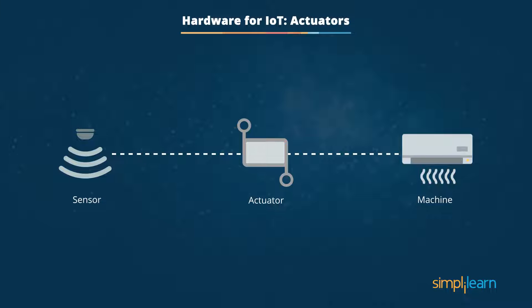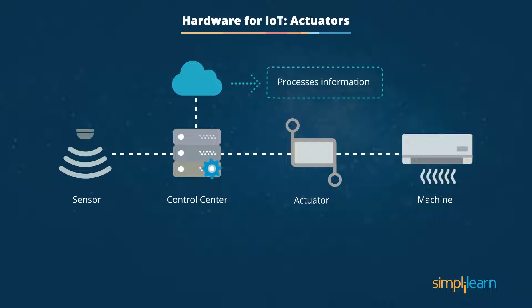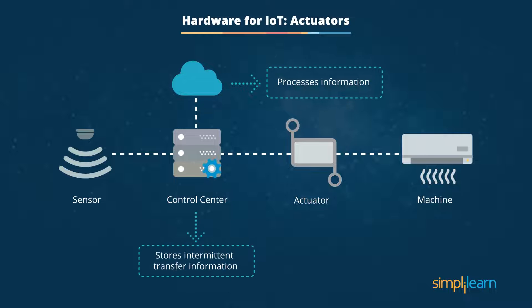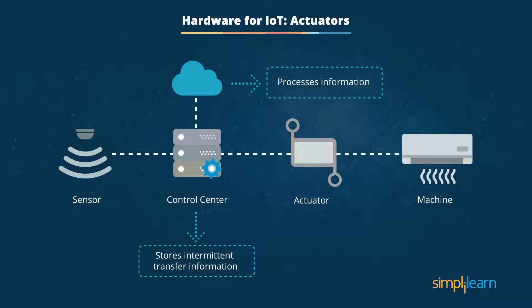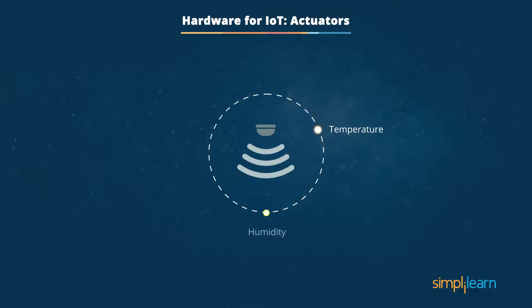Actuators work as an interface between sensors and machines and collect various information like humidity and light intensity. This information is computed using the edge layer, which typically sits between the cloud and the sensor — the layer that stores the intermittent transfer of information. The backend server of the cloud then processes this information. Both sensors and actuators are chief components of IoT; sensors measure temperature, humidity, light intensity, and other key parameters of the home environment.